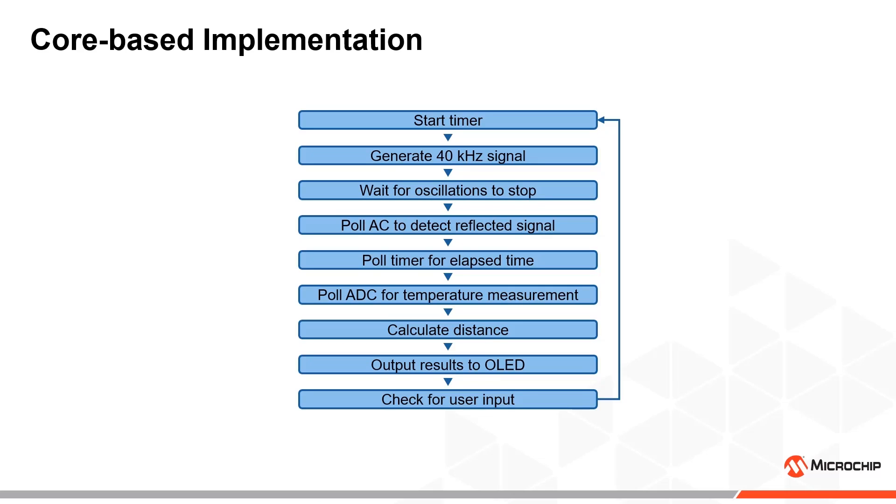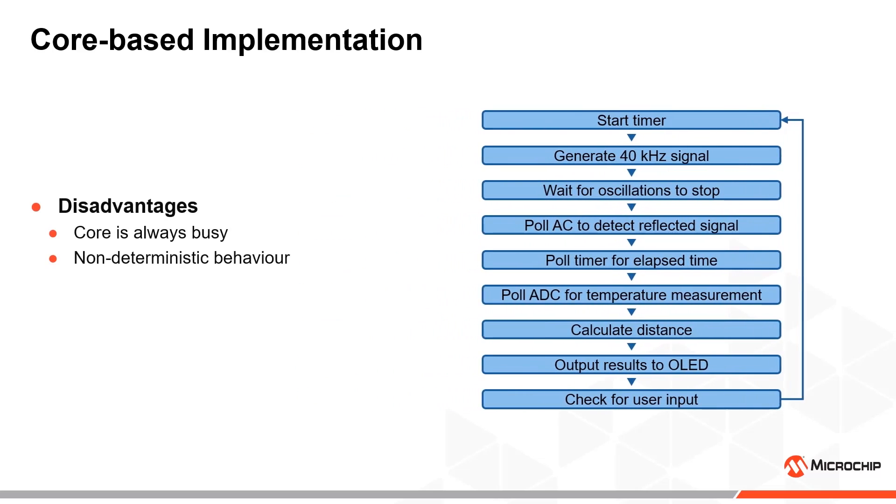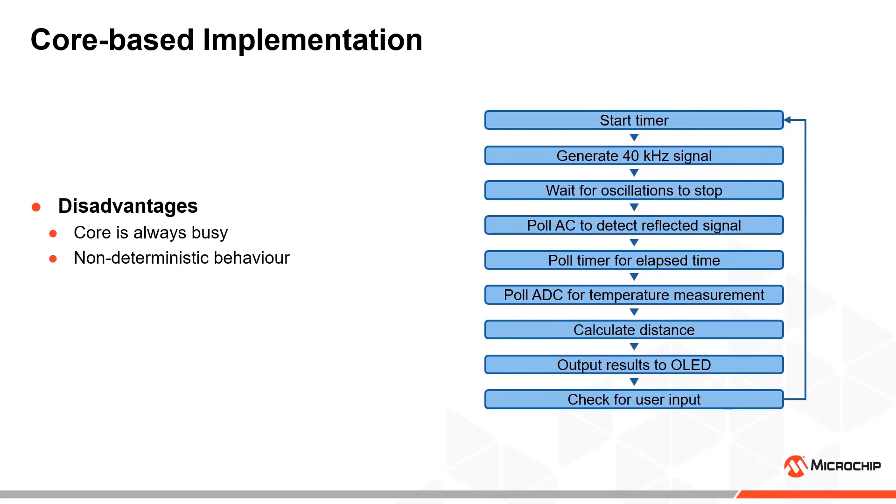This core-based implementation can be made to work, but it has some disadvantages that will affect the measurement accuracy. Since the whole application is heavily reliant on the core, it is not possible to use the core for any other processing simultaneously, without affecting the performance and accuracy of the distance sensor.